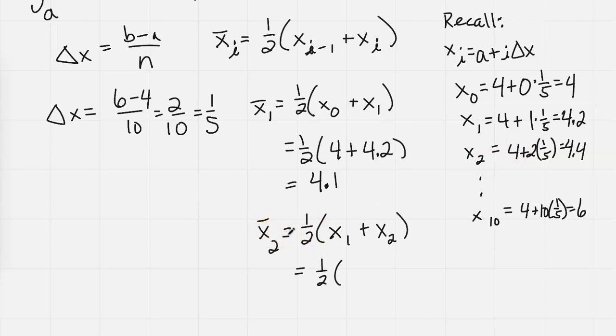So that's equal to 1 half - x sub 1 was 4.2, plus x sub 2 over here on the right I'm seeing is 4.4. I think we can see that the midpoint between those would be 4.3, but you can use your calculator and verify that for yourself.